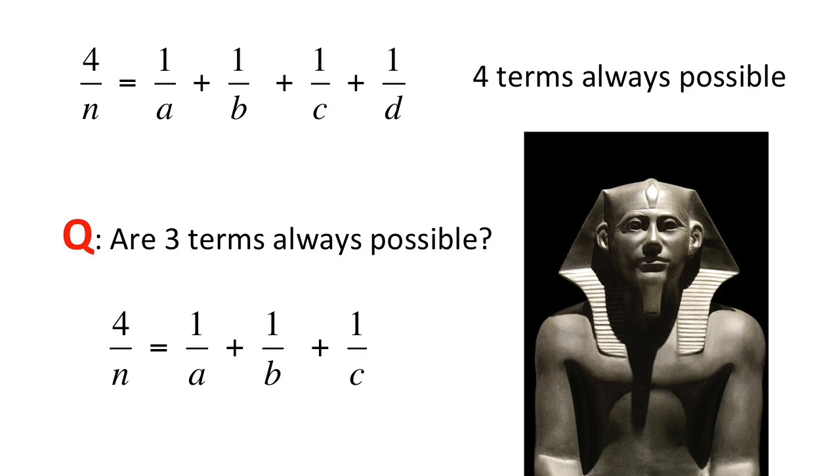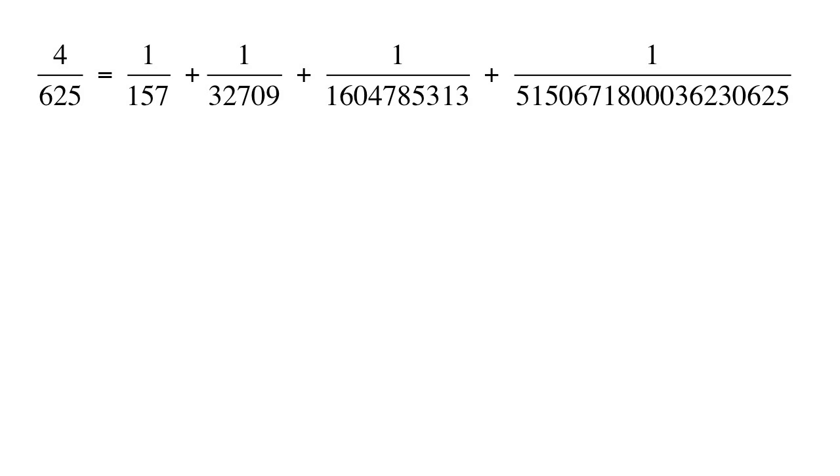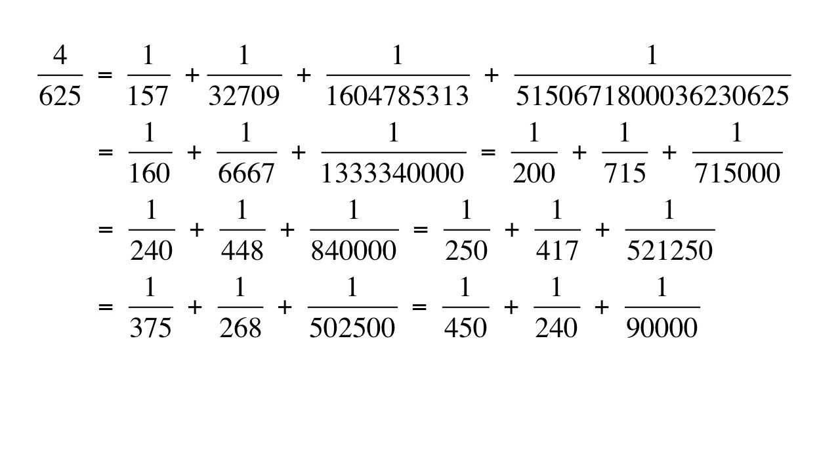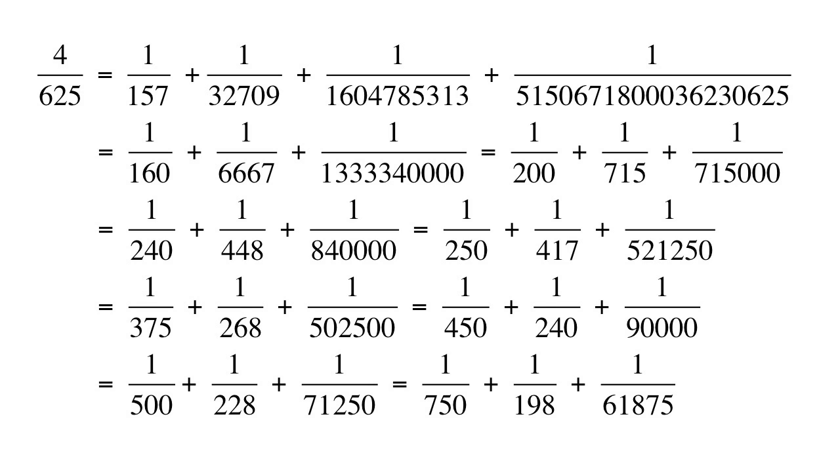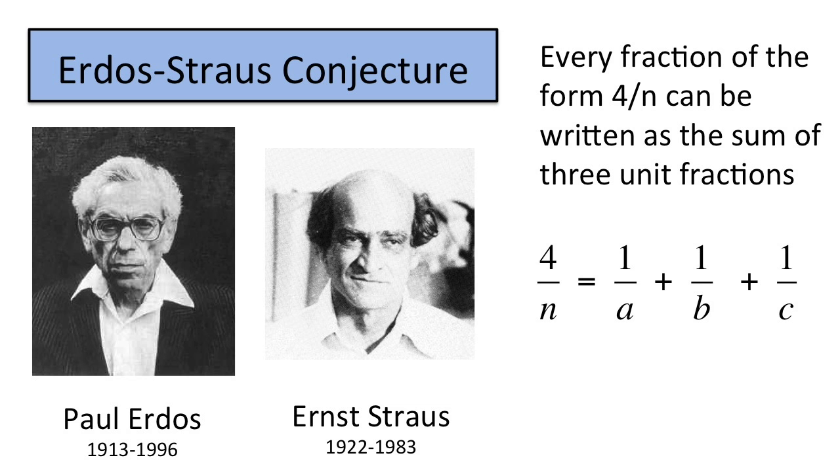Here's the mystery question. Is it always possible to write four over n as an Egyptian fraction with only three terms? For example, we saw four over six twenty-five earlier, but there are many ways to write it with only three fractions. This problem, posed by Paul Erdős and Ernst Strauss in 1948, is now called the Erdős-Strauss conjecture, and it's still unproven.